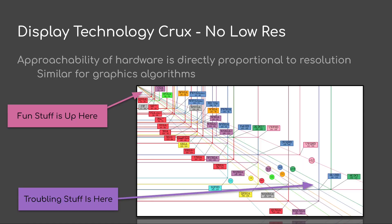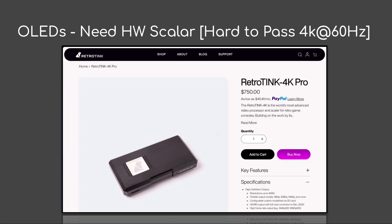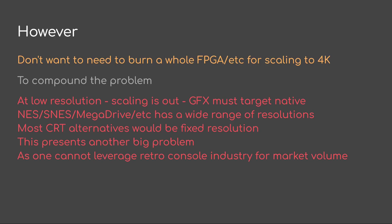The crux of display technology today is they're only manufacturing the high-resolution stuff. We would need a hardware scaler for this, or we would need to put the scaler in the device itself. Even external scalers have a hard time going above 4K at 60 Hz due to the insane pixel rates. We don't necessarily want to burn a whole FPGA for scaling to 4K. And to compound the problem, at low resolution, scaling is out — graphics must target the native resolution.